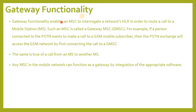Gateway Functionality enables an MSC to interrogate a network's HLR in order to route a call to a mobile station. Such an MSC is called a gateway MSC. For example, if a person connected to the PSTN wants to make a call to a GSM mobile subscriber, the PSTN exchange will access the GSM network by first connecting the call to a GMSC. The same is true of a call from an MS to another MSC, as any MSC in the mobile network can function as a gateway by integration of the appropriate software.